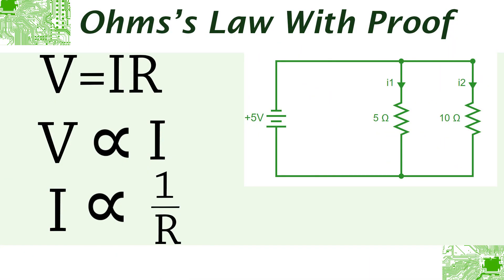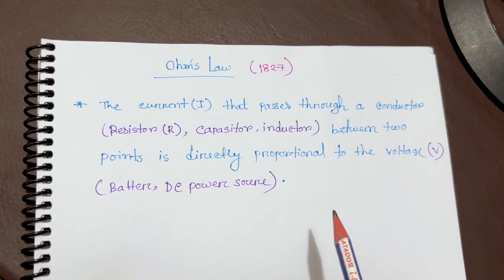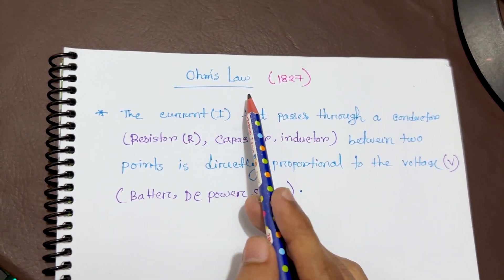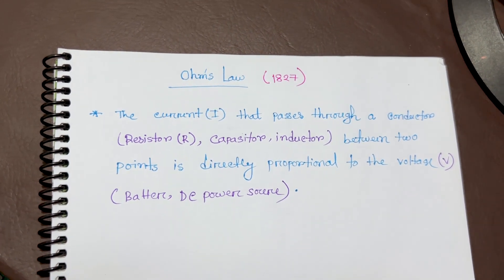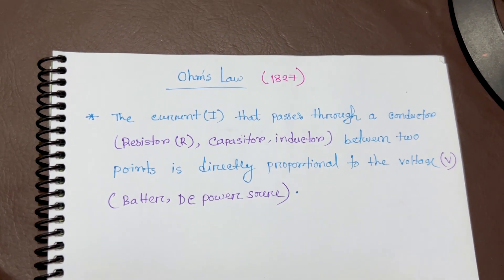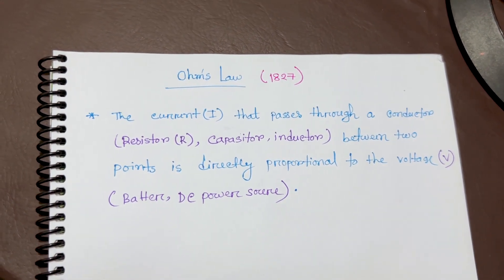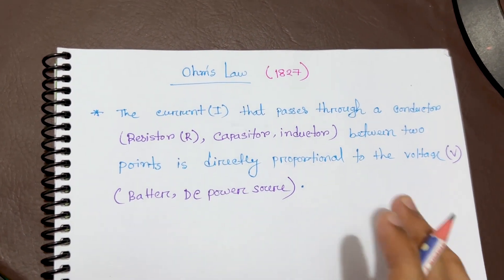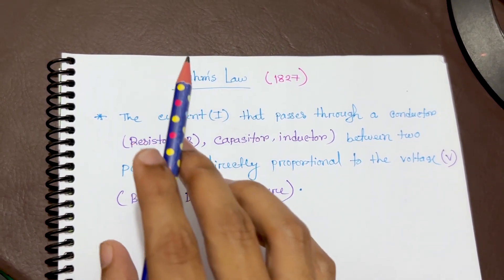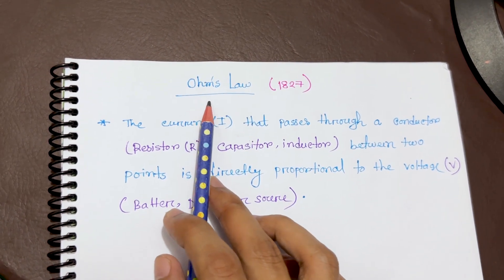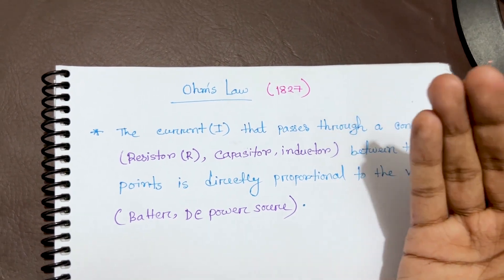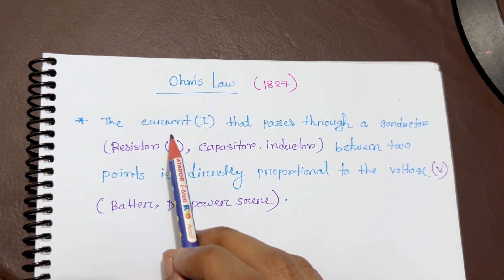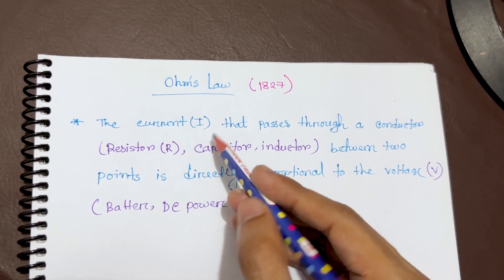Hello guys, welcome to my channel. This is part one of our electrical circuit devices course. This video is really important because it covers Ohm's Law, which is the root, basic, and elementary knowledge that every student needs — whether you are at SSC level, HSC level, or engineering level. This rule, V equals IR, was invented in 1827 — almost 200 years ago. Ohm says the current, which we denote as I and measure in amperes...